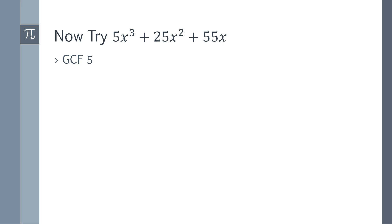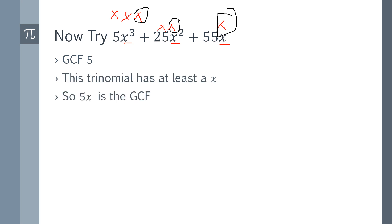The greatest common factor of the trinomial — which had terms 5x cubed, 25x squared, and 55x — was not only 5 but also x, because each term has at least one x. The 5x cubed has three x's, 25x squared has two, and 55x has one. So you can take out an x because every term has at least a single x. The greatest common factor is 5x. Factor out 5x and leave everything else inside.